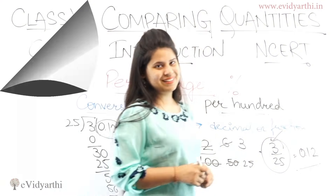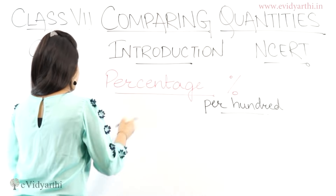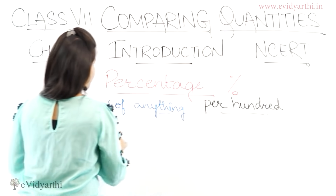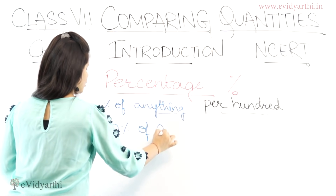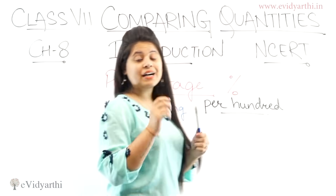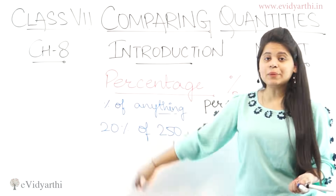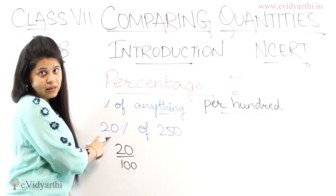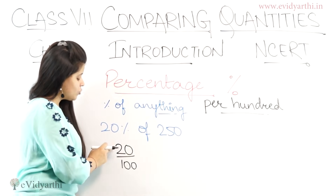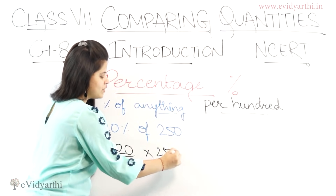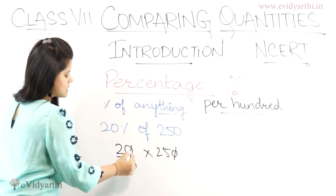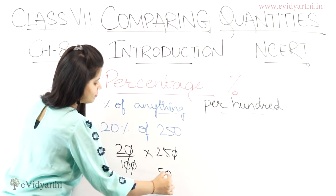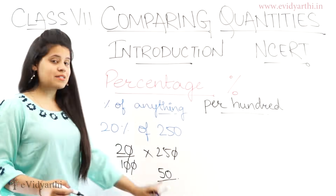Our next topic is percentage of anything. For example: find 20% of 250. How? Write 20% as 20/100, and 'of' means multiply. So 20/100 × 250. Cancel zeros: 20/100 × 250 = 25 × 2 = 50. So 20% of 250 is 50.